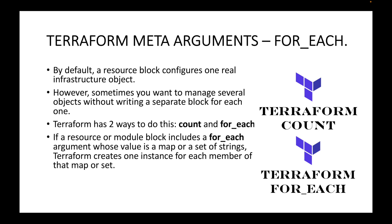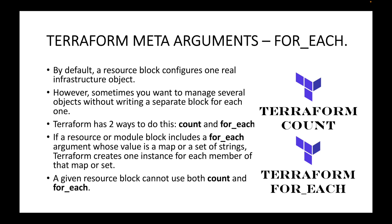If a resource or module block includes a for_each argument whose value is a map or a set of strings, Terraform creates one instance for each member of that map or set. The main difference between count and for_each is that count launches instances with the same configuration — for example, three instances with the same AMI and instance type. For_each can be used when you want to launch three instances each with a different configuration, such as ami1, ami2, and ami3.